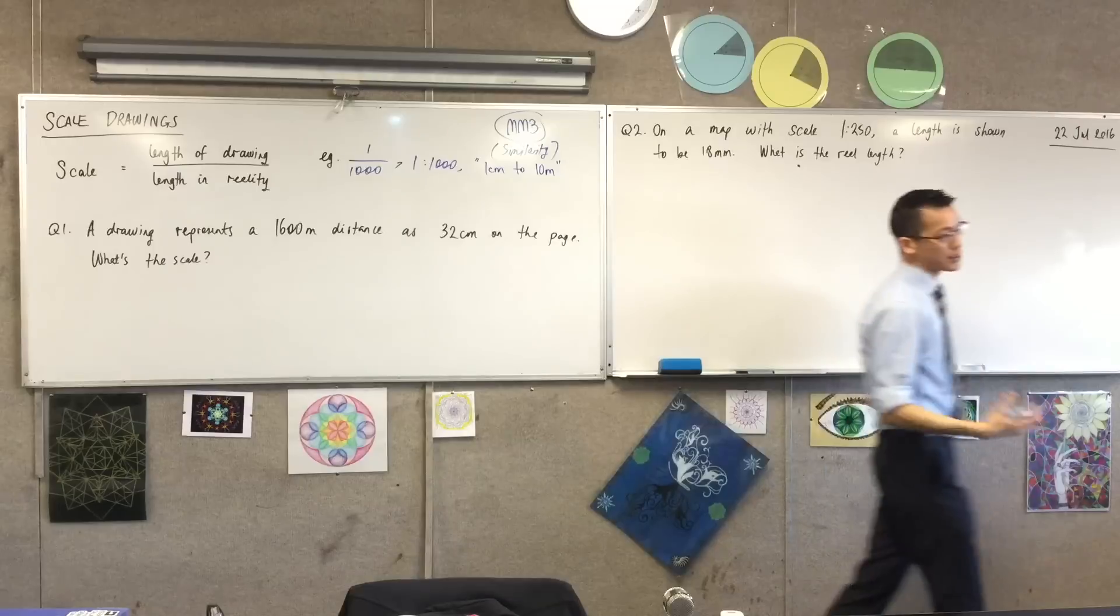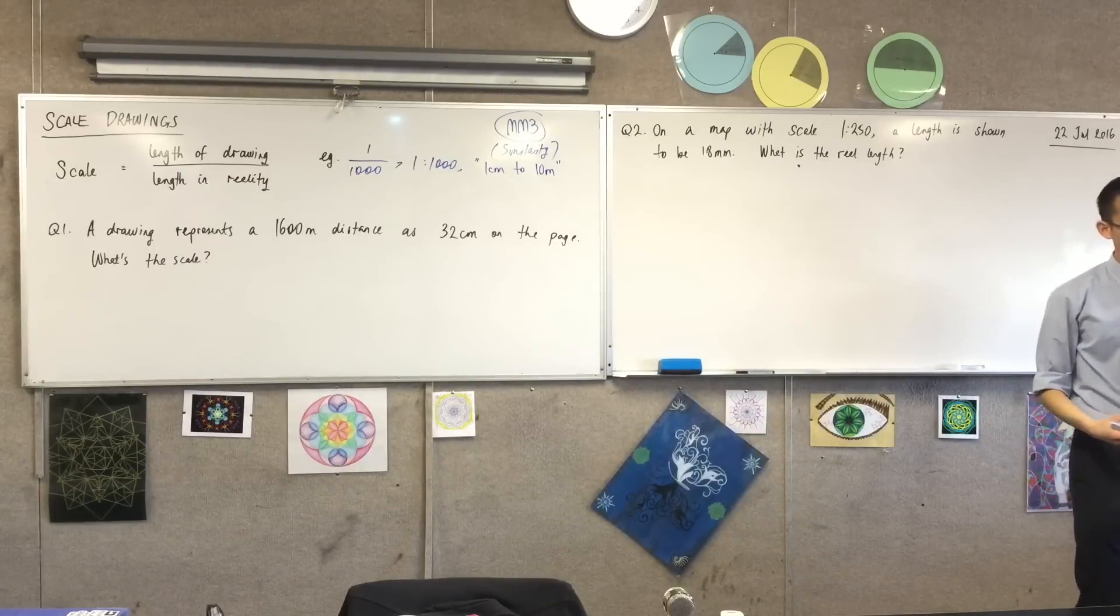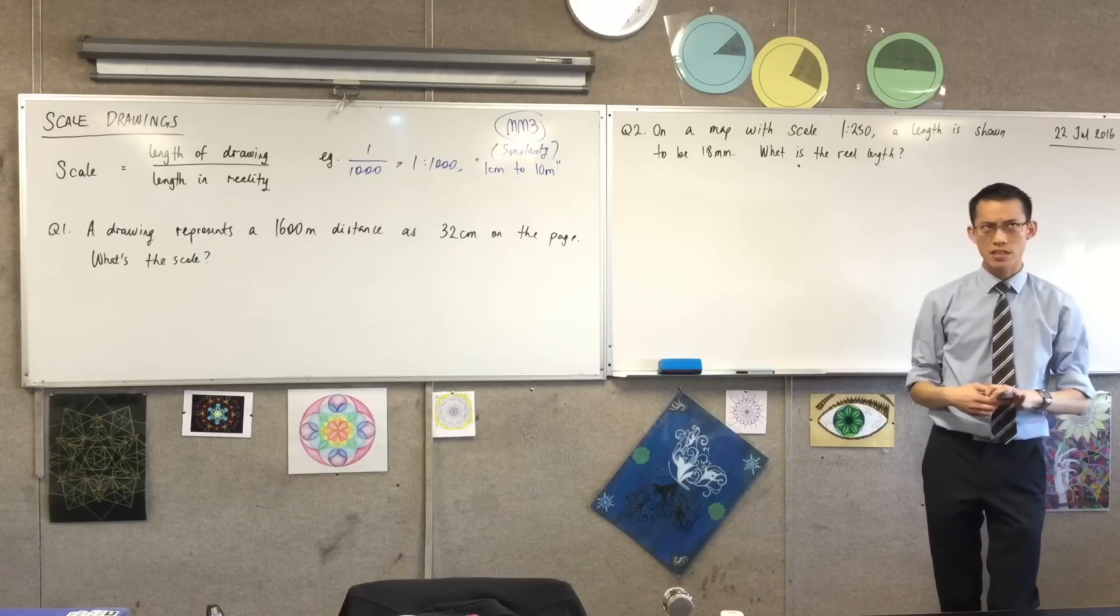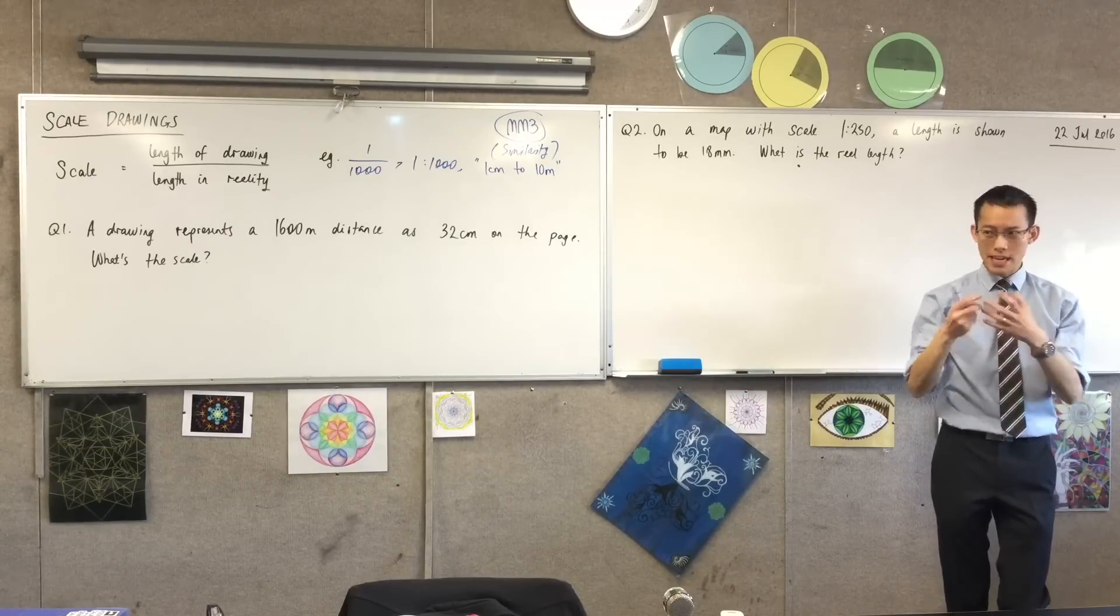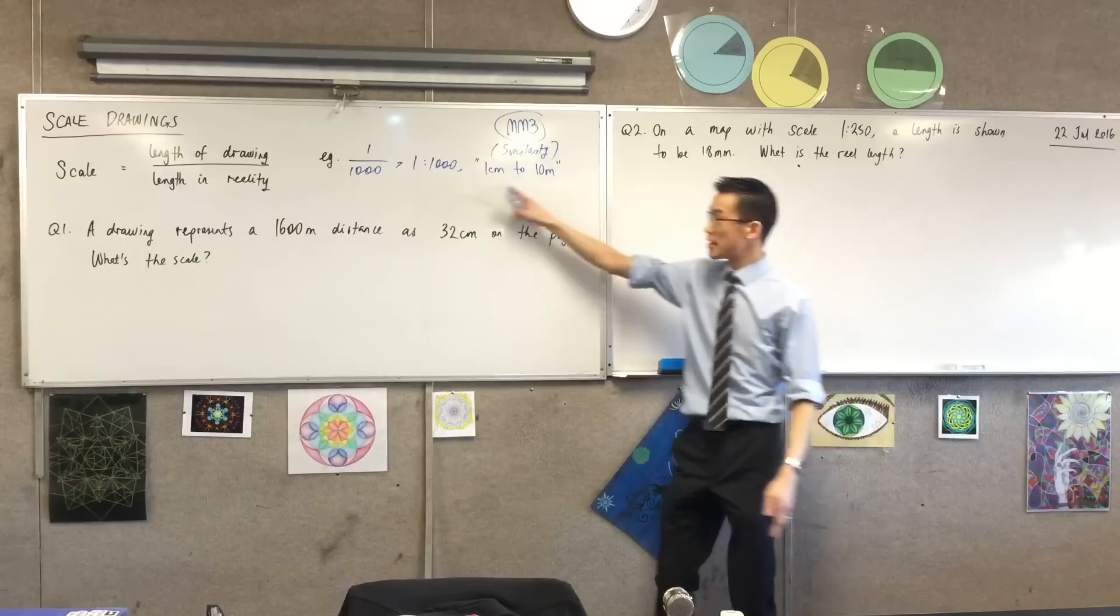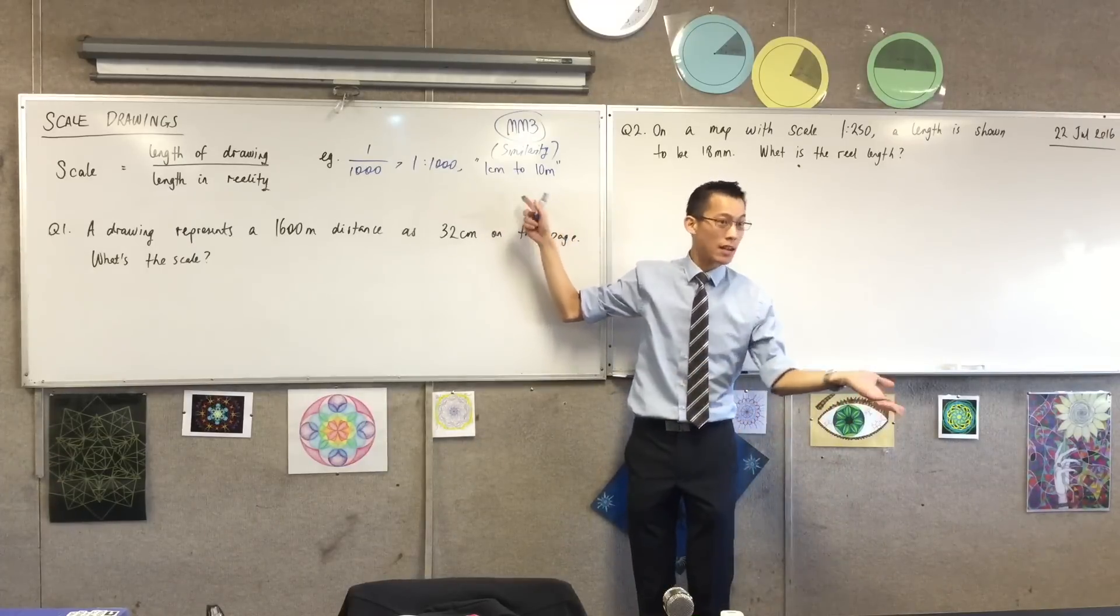So one centimeter to ten meters, if you recall, ten meters is how many centimeters again? Ten meters? Each meter is a hundred centimeters, so therefore ten meters is a thousand. So this is another way of saying one to a thousand. Does that make sense?